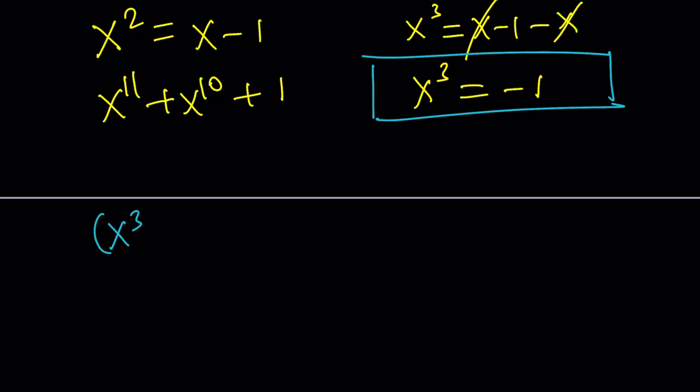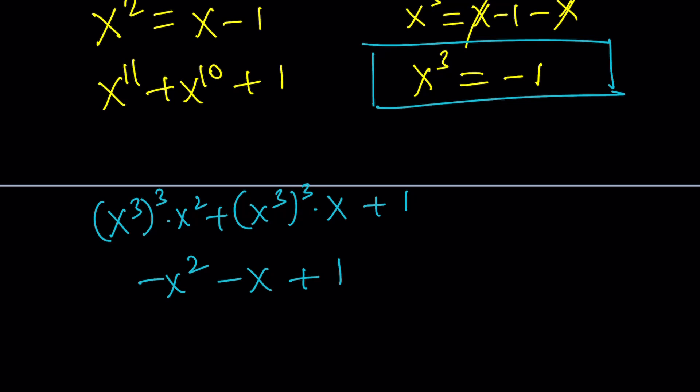We're just going to write x to the 11th as x to the 3rd to the 3rd times x squared. x to the 10th as x to the 3rd to the 3rd times x plus 1. Now, x to the 3rd is negative 1, so this is going to give me negative x squared. This is going to give me negative x plus 1. Okay, what's that supposed to mean?